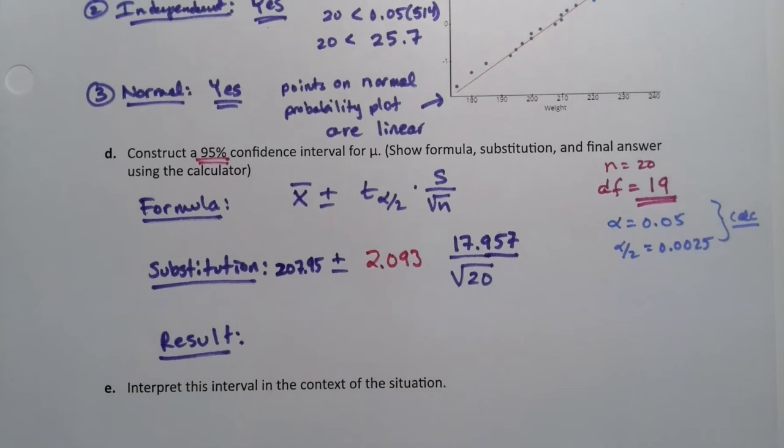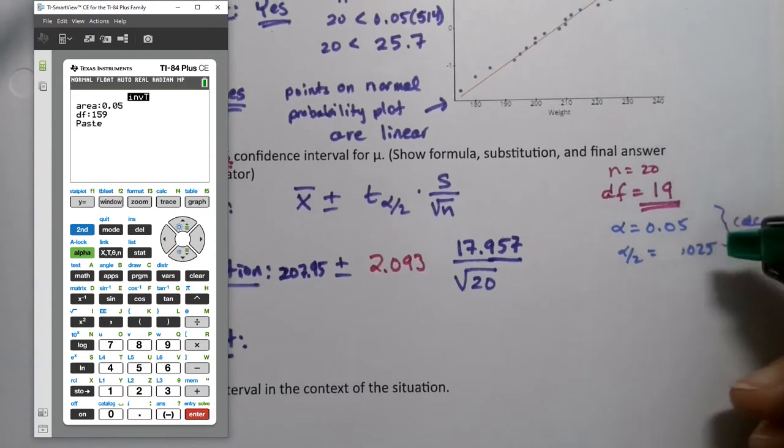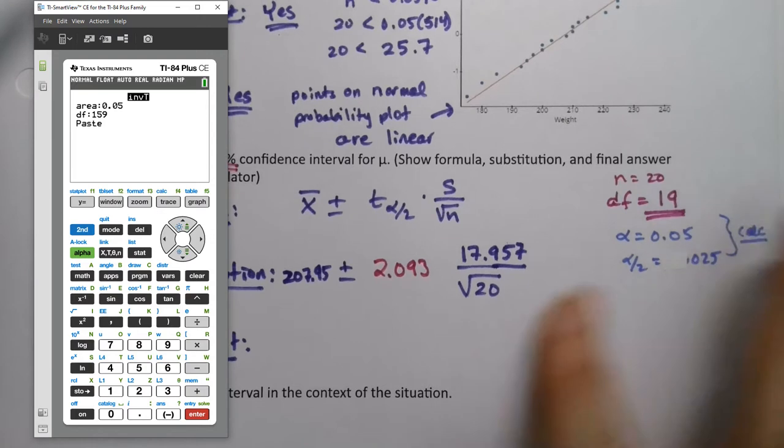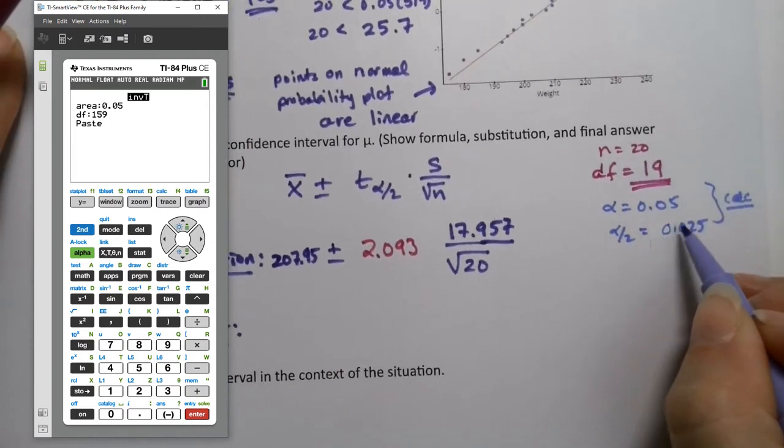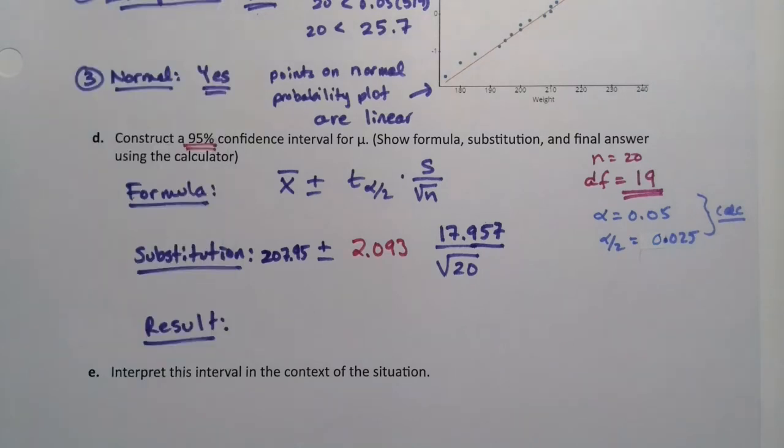If you use the calculator to do it, you'd have to do second distribution. Inverse T, which is number four. And I just realized I have too many zeros. It's 0.025, not 0.005. So it'd be 0.025, my degrees of freedom is 19. I would paste it in and press enter. It'll give me a negative answer but that's okay. It's the 2.093. So that worked out great.